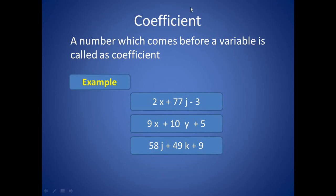Coefficient — a number which comes before a variable is called a coefficient. For example, in this expression, 2 is a coefficient and 77 is a coefficient. And in this expression, 9 is a coefficient and 10 is a coefficient.